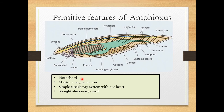In advanced animals, the notochord is replaced by the vertebral column. The second primitive feature is myotomic segmentation — the muscles are segmented, which is visible externally. Another primitive feature is a simple circulatory system without a heart; there is no specialized heart even though Amphioxus comes under the Chordata.